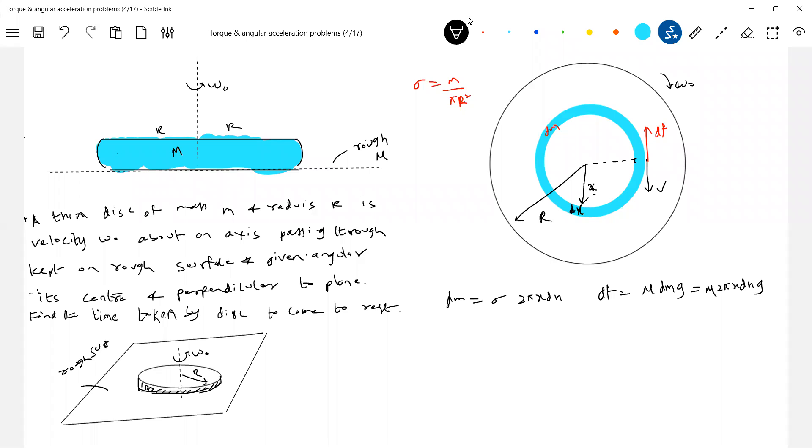This will set up a torque. So that is d tau equal to df into r. df is, okay, df into x. Mu 2 pi sigma x dx g into x. So what is the total? 2 pi mu sigma g x squared dx. So let me go for integration now. Torque about point.